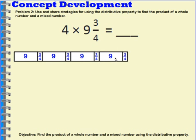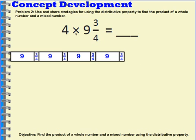And I'm going to put that on the side and we're going to think about this with multiplication. So four times nine and three-fourths, I want to take my nine and three-fourths and break it up into nine plus three-fourths.